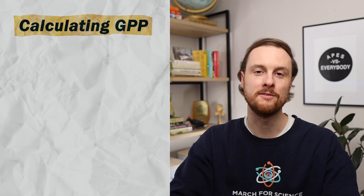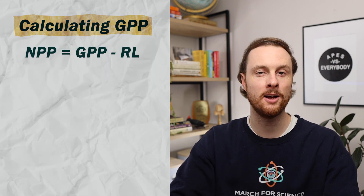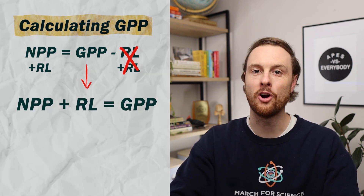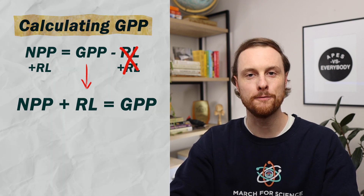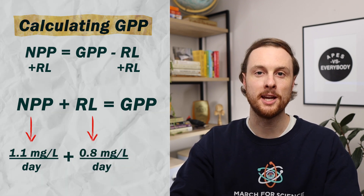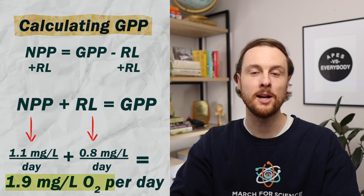Finally, to determine the gross primary productivity or GPP of our guppy grass, we can rearrange our initial equation — NPP equals GPP minus RL — by adding RL to both sides to get GPP by itself. Plugging in the NPP of 1.1 milligrams per liter per day and respiration rate of 0.8 milligrams per liter per day, the total photosynthetic rate or gross primary productivity of our guppy grass was 1.9 milligrams of oxygen per liter per day. If you're doing this lab as a class, you can also convert this photosynthetic rate to a rate of carbon production by the plant, along with a whole host of other discussion questions.